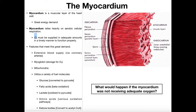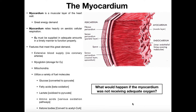Therefore, the myocardium is going to require tons of oxygen, O2. The O2 must be supplied in adequate amounts in a timely manner for the myocardium to function properly. There are a few things associated with the myocardium that help it meet this oxygen demand. The heart muscle as a whole has an extensive blood supply.